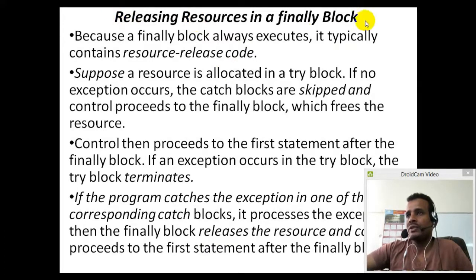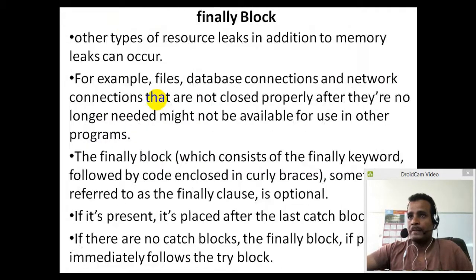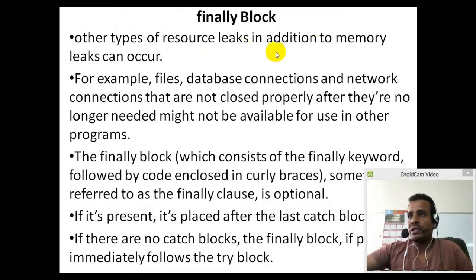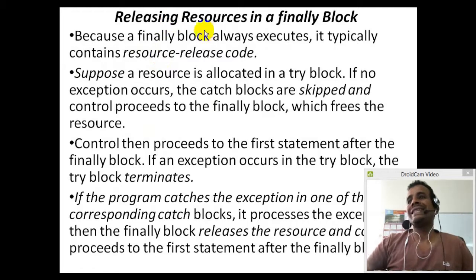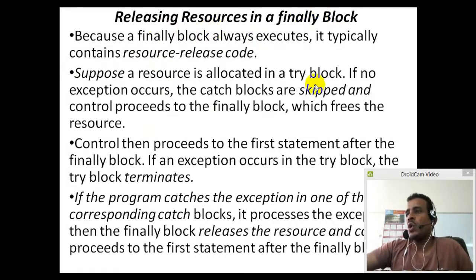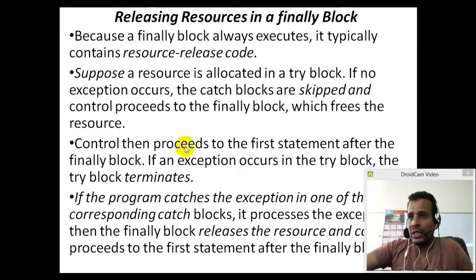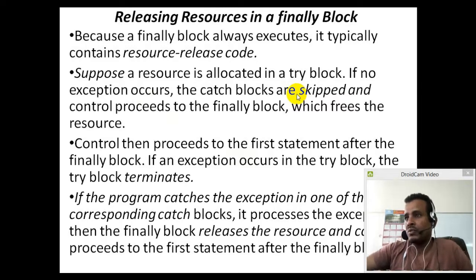Resource leak — types of resource leaks in addition to memory leak include file, database, and network leaks. The finally block is the right place to release resources. Suppose resources such as a scanner or file or database connection are opened in a try block.